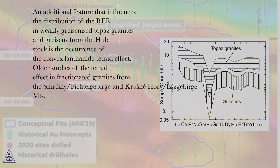An additional feature that influences the distribution of the REE and weakly greisenized topaz granites and greisens from the Hubstock is the occurrence of the convex lanthanide tetrad effect.